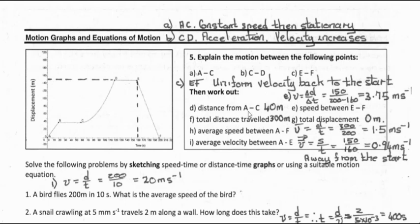It then says: work out the distance from A to C. The distance from A to C equals the magnitude of the displacement. We can see it's gone from 0 to 40 meters, and it doesn't travel any further to C, so the distance is 40 meters in total.